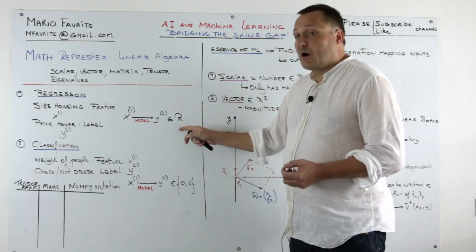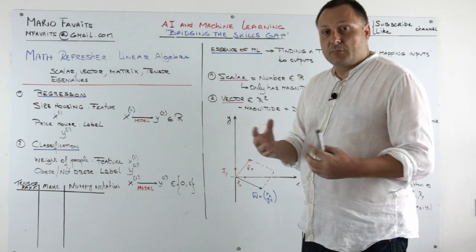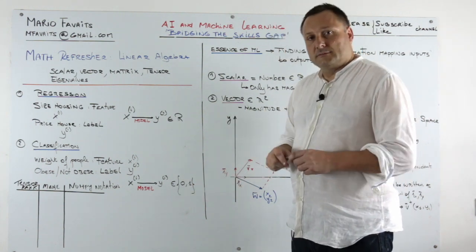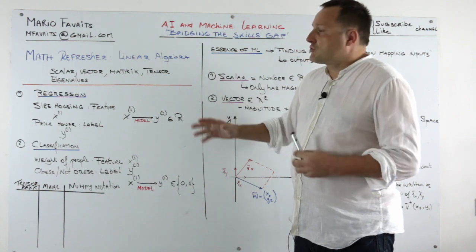So here Y is an element of R. R means all the real numbers. And here Y is either a zero or a one. So it's all about transformations.